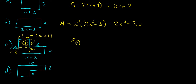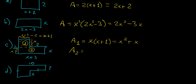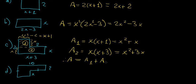So let's find the areas. Area 1 is x times x plus 1, which expands to x squared plus x. For Area 2, we have x times x plus 3, which expands to x squared plus 3x. Adding the two areas together gives the total area: x squared plus x squared is 2x squared, and x plus 3x is 4x. So the total area of the L-shape is 2x squared plus 4x.